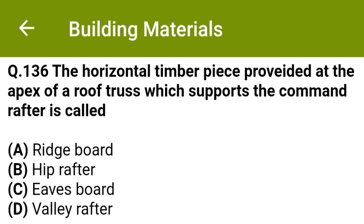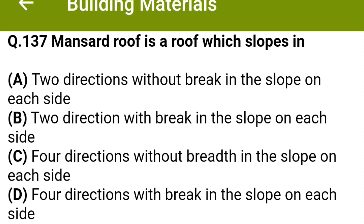The horizontal timber piece provided at the apex of the roof truss which supports the common rafter is called: option A ridge board, option B hip rafter, option C eaves board, option D valley rafter. The correct answer is option A, ridge board.